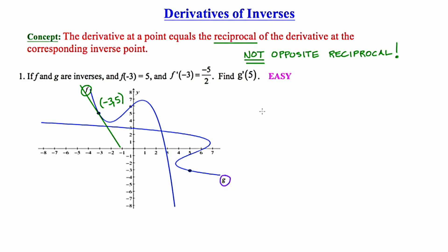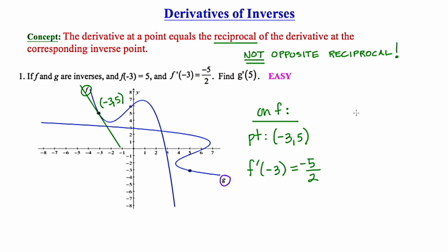I'll make an organizational chart of what I know and what I'm trying to find. On the graph of f, I have the point negative 3, 5, and the slope of the tangent line at that point is negative 5 halves. Now for g: since f and g are inverses, if the point negative 3, 5 exists on f, then the point 5, negative 3 exists on g. Finding an inverse simply means interchanging x and y coordinates.